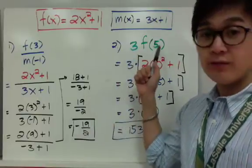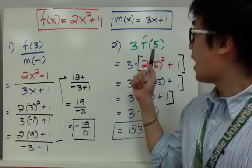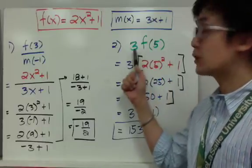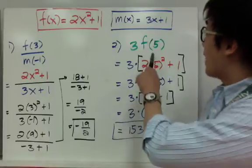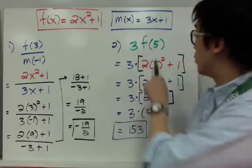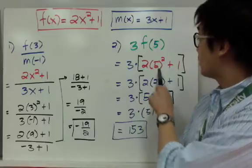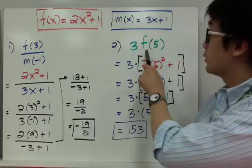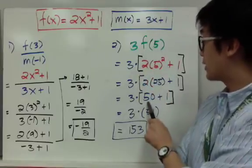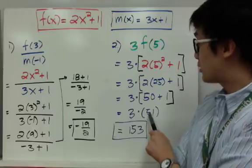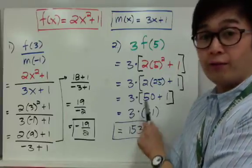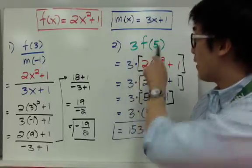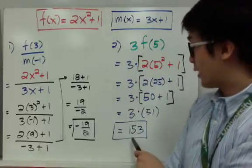For number 2, I have 3 times f of 5. This simply means I need to evaluate f of 5 first, then multiply the result by 3. So f of 5 is 2x squared plus 1 with x replaced by 5, giving 2 times 25 plus 1, which is 50 plus 1, or 51. Then multiplying by 3, we get 3 times f of 5 equals 153.